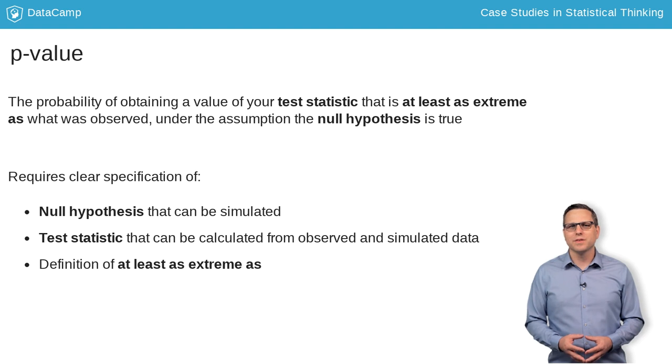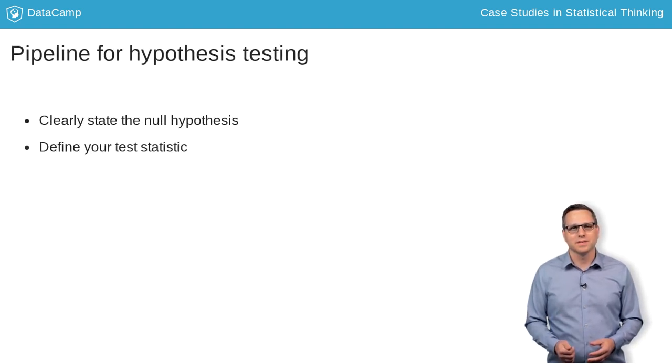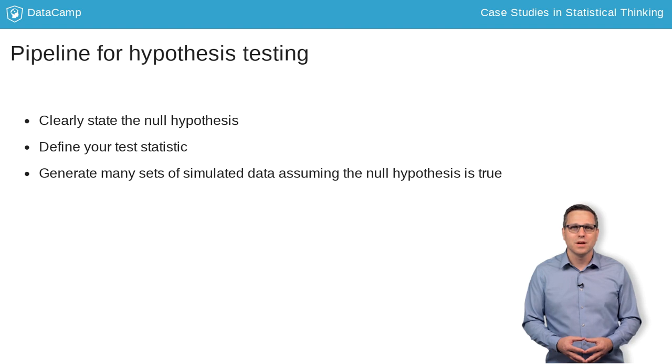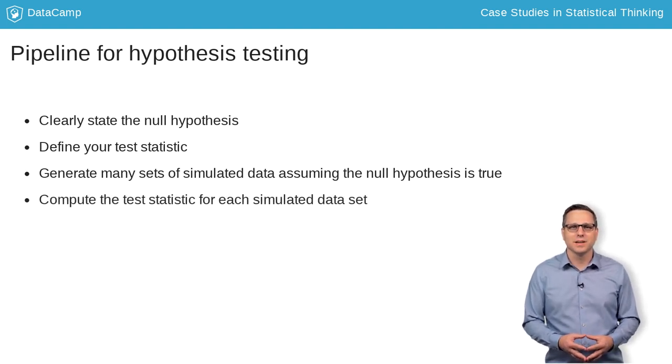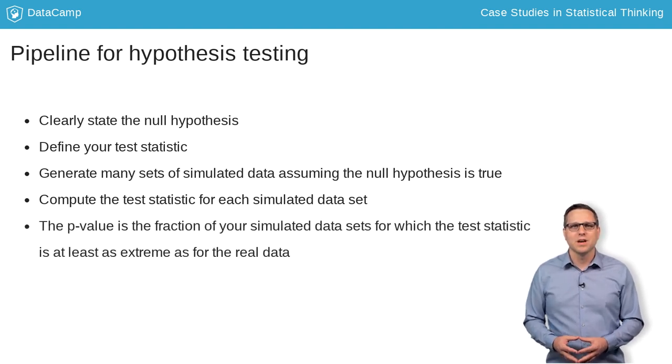So the pipeline for doing a hypothesis test is to clearly state the null hypothesis and test statistic. Then you simulate production of the data as if the null hypothesis were true. For each of these simulated data sets, compute the test statistic. The p-value is then the fraction of your simulated data sets for which the test statistic is at least as extreme as for the real data.